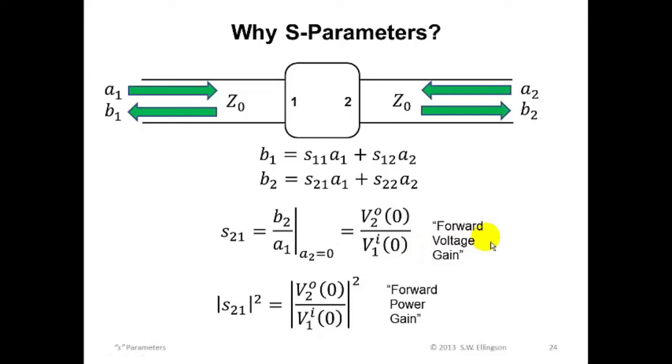However, since the transmission line on either side is defined to have the same characteristic impedance, that is Z-naught, the magnitude squared of this quantity is the forward power gain. And that's only true because the input and output impedances are equal. If the input and output impedances were not equal, then we would have a forward power gain in some sense, but it would be relative to other impedances. This particular quantity is very convenient for RF work.